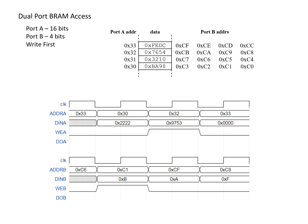The set of examples in this video will illustrate how an FPGA block RAM, or BRAM, functions when the ports are set up with different widths. In this example, we're going to look at a case where port A is set up with 16-bit entries and port B is set up for 4-bit entries.